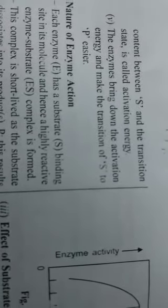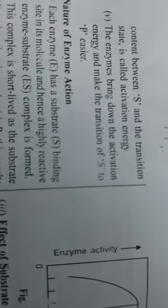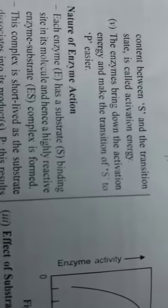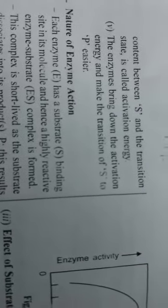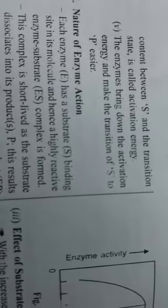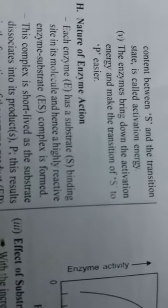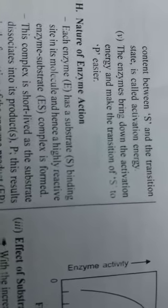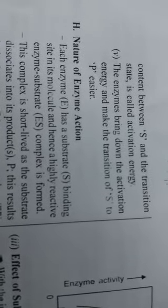Enzymes bring down the activation energy. Their main job is to lower the activation energy, which is the energy required for completion of the reaction, and make the transition of S to P easier. Making product from substrate becomes easier. This is about some of the factors relating to enzymes.